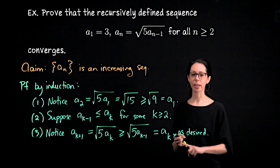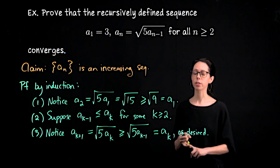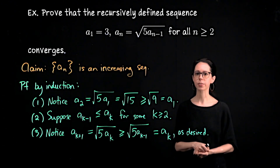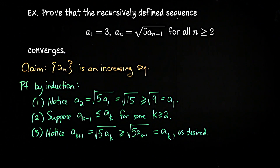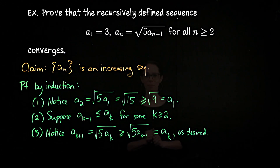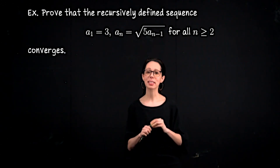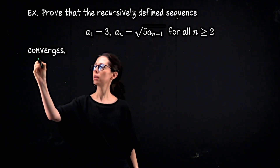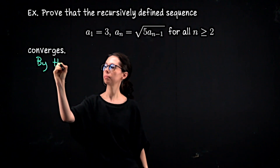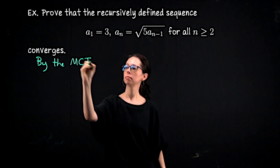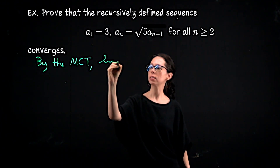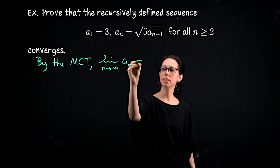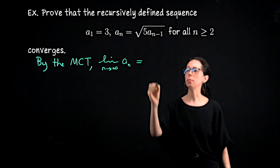Now we have that the sequence is bounded and increasing. We apply the monotone convergence theorem to know it has a limit, and then we'll compute that limit. By the MCT, the limit as n goes to infinity of a sub n exists and is some real number, which I'll name L.